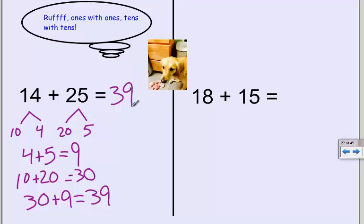This method is also called partial sums, because what we are doing is we are just adding parts and parts and parts until we get the whole.